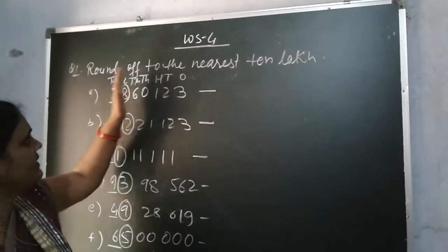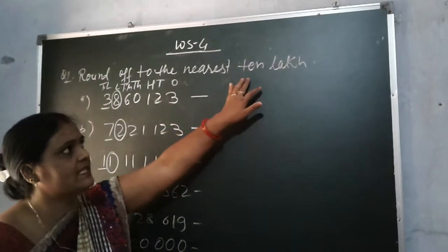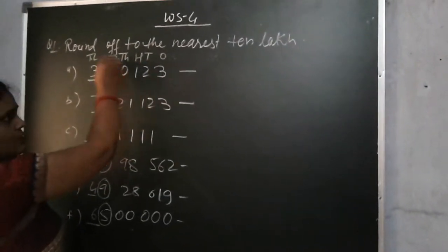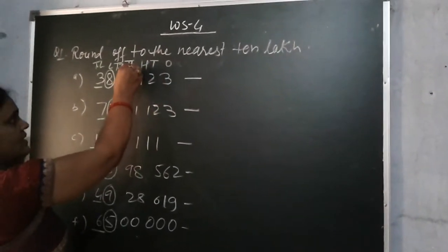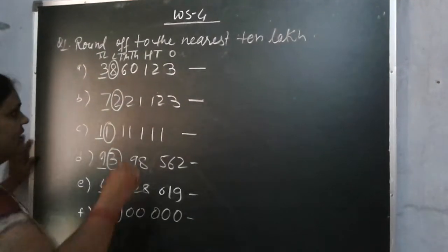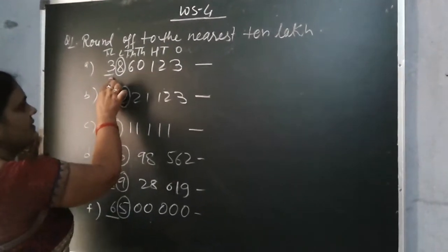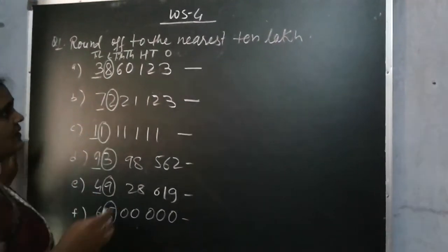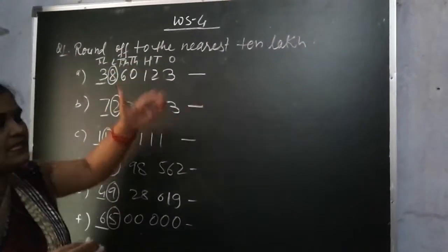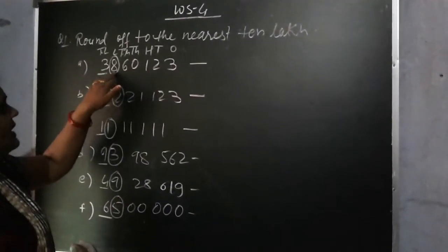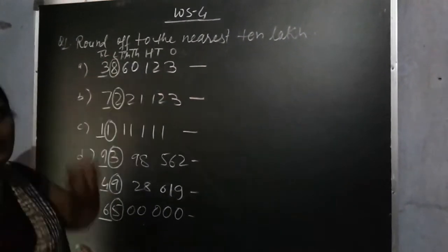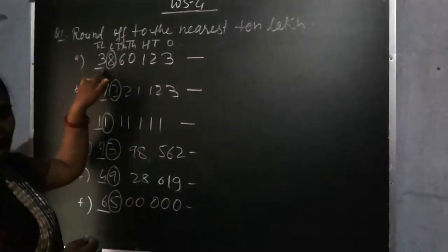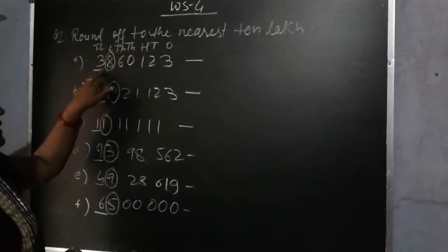Children, whenever we have to round off to the nearest 10 lakh, I have written the numbers and also written their places: 1, 10, 100, 1000, 10,000, lakh, and 10 lakh. I have underlined the digit of the 10 lakh place. When we round off to the nearest 10 lakh place, then we look at the digit of the lakh place — the 1 lakh place.